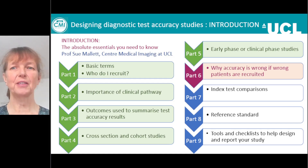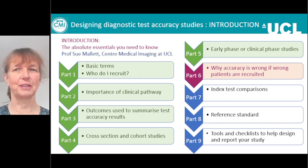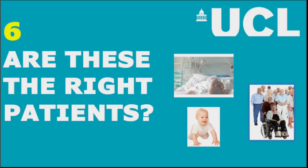This is part six: why accuracy is wrong if the wrong patients are recruited — are these the right patients? Here we've got some patients you may remember from the introduction, part one: we've got the baby, the person in intensive care, and the set of patients who are in primary care.